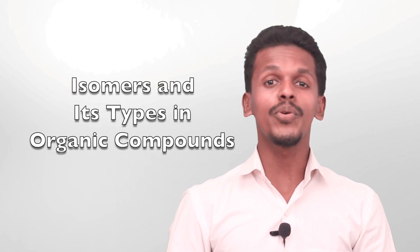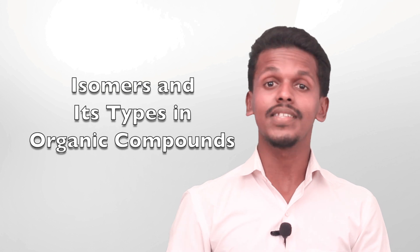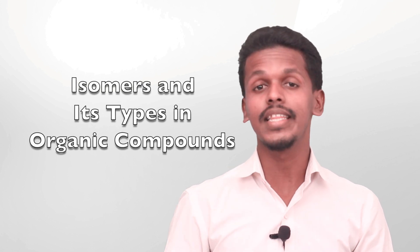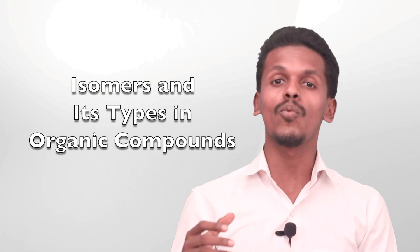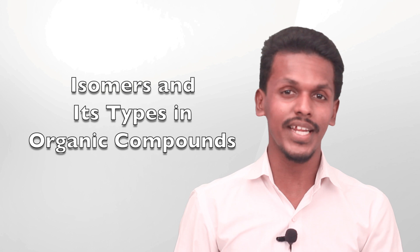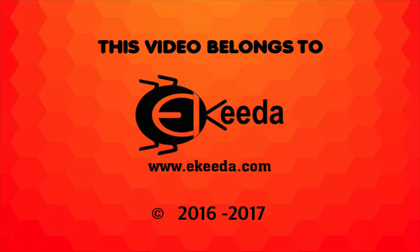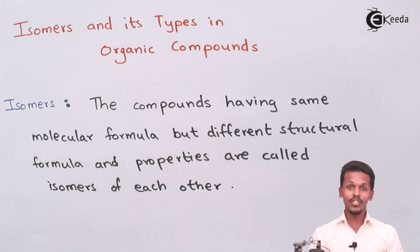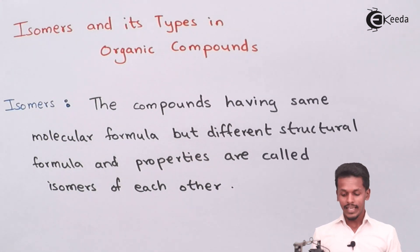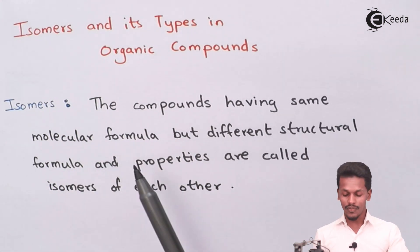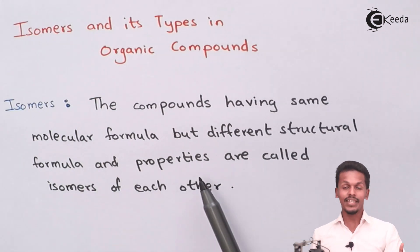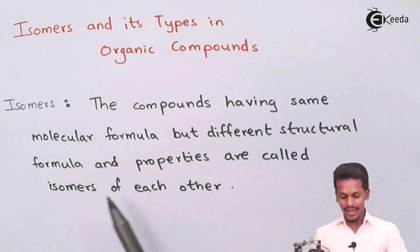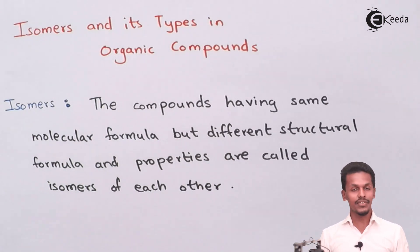Hello friends. Now we are going to talk about isomers that take place in organic compounds. So what are isomers? Basically, isomers are compounds having the same molecular formula but different structural formula and properties — they should also have different properties. Such compounds are called isomers of each other.